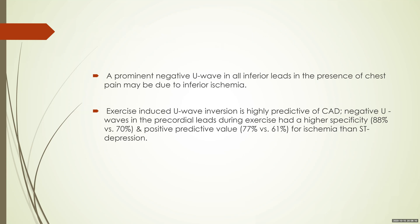Similarly, a prominent negative U-wave in all inferior leads — that is leads 2, 3, and AVF — in the presence of chest pain may indicate inferior ischemia. This is not as well validated as for the anterior leads, but it has been studied. Exercise-induced U-wave inversion during a treadmill test is highly predictive of coronary artery disease. Studies have shown that a negative U-wave in precordial leads during exercise has higher specificity and positive predictive value for ischemia than ST depression itself.